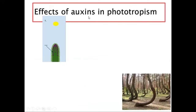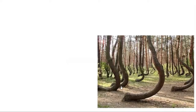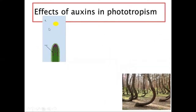So what is the effect of auxins in phototropism? If light is changing direction, the plant can bend in any way because it's supposed to follow the source of light. When light falls on the whole shoot equally, the shoot grows upwards. Let's look at what causes the shoot to bend towards the source of light.